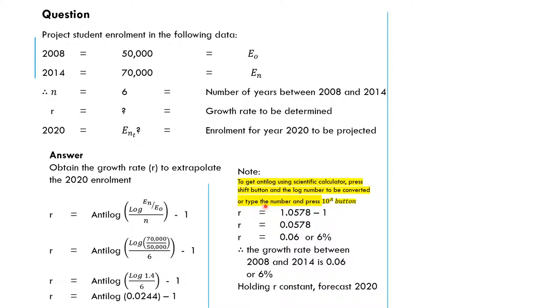However, this area that has yellow is a pointer for us. To get your anti-log from the calculator, there are two ways you can achieve this. Press the shift button and the log number to be converted, or type the number and press 10 raised to the power n in the button.